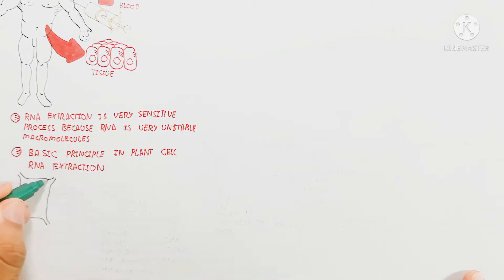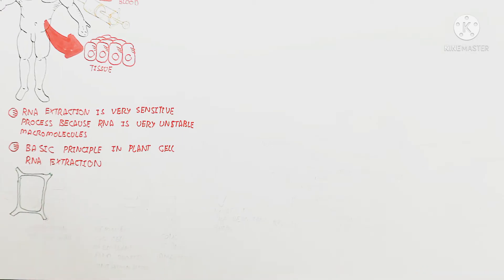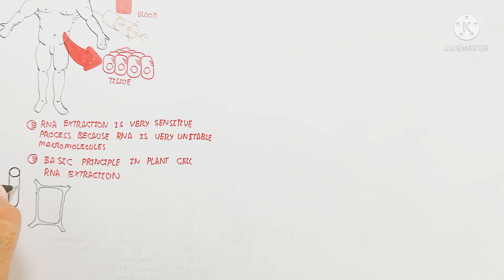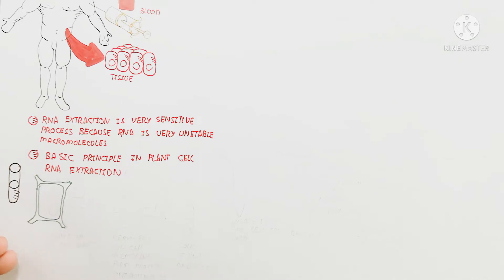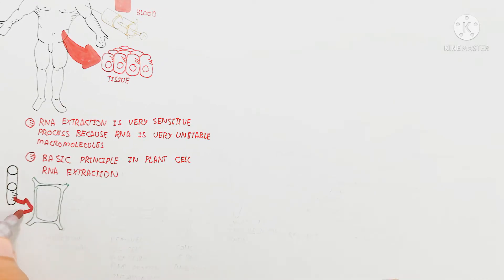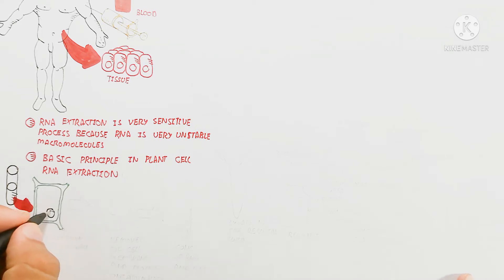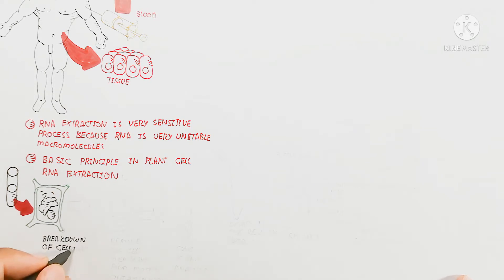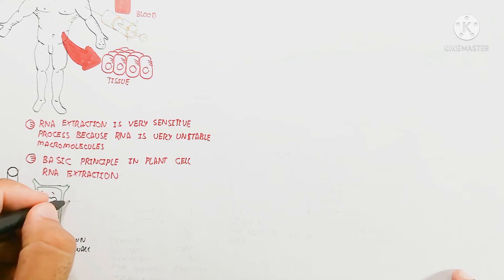Breakdown of the cell wall is an additional process because animal cells lack a cell wall. Removal of the cell membrane and protein contamination is done the same way as in a human cell. We will then discuss the composition of the RNA analysis.